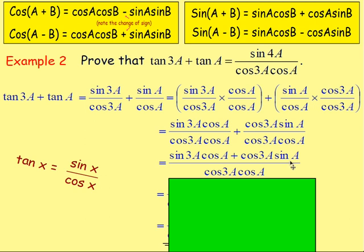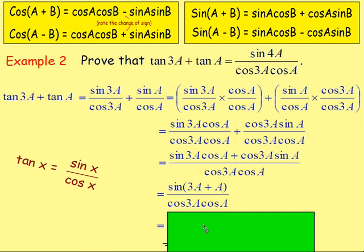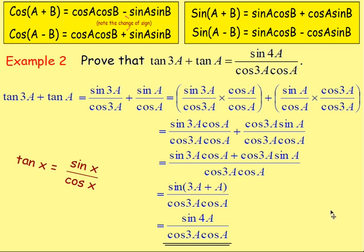The denominators are now the same, so add the numerators to get sin(3a)·cos(a) + cos(3a)·sin(a). Looking at the addition formulae, this matches sin(a + b) = sin a·cos b + cos a·sin b, so we can rewrite this as sin(3a + a), which equals sin(4a). The denominator remains cos(3a)·cos(a). So we've proved that tan(3a) + tan(a) = sin(4a) / (cos(3a)·cos(a)).